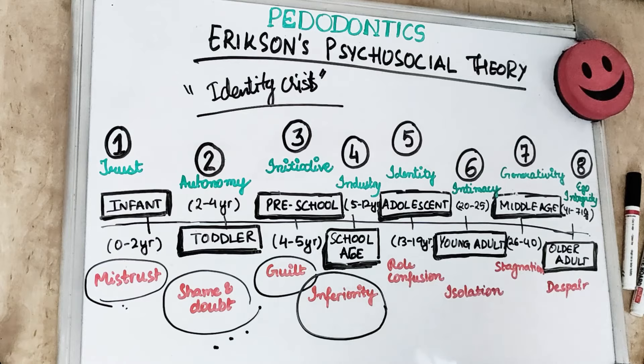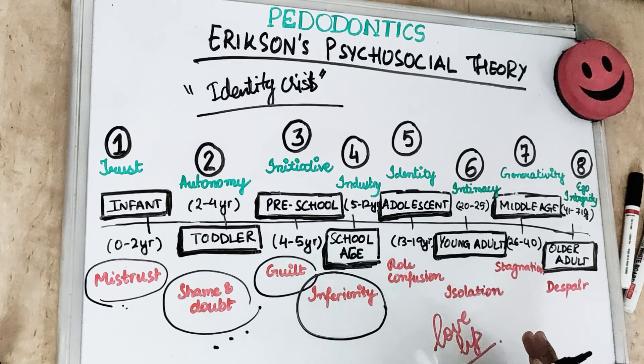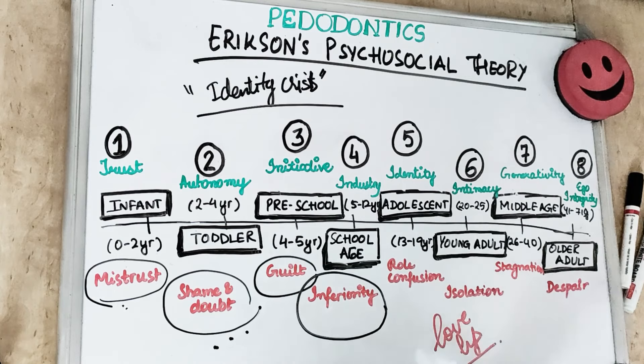The sixth stage is intimacy versus isolation, which is about young adulthood and love life. A successful young adult for the first time experiences love, intimacy, and further on, a good marriage and genuine friendships. At this stage, external appearance and aesthetics are very important, especially to achieve intimate relationships. Young adults usually seek orthodontic treatment for appearance, but if any alteration of looks is done it can interfere with previously established relationships, so the treatment should be explained and discussed properly with the young adult.